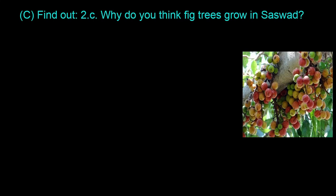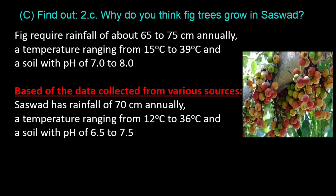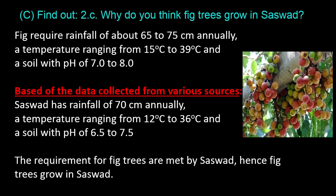Question C, Find Out, 2C: Why do you think fig trees grow in Saswad? Fig requires rainfall of about 65 to 75 centimeters annually, a temperature ranging from 15 to 39 degrees Celsius, and a soil with pH of 7.0 to 8.0. Saswad has rainfall of 70 centimeters annually, a temperature ranging from 12 to 36 degrees Celsius, and a soil with pH of 6.5 to 7.5. The requirements for fig trees are met by Saswad, hence fig trees grow in Saswad.